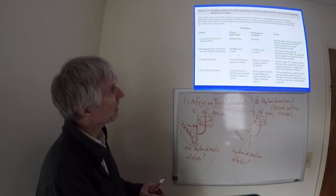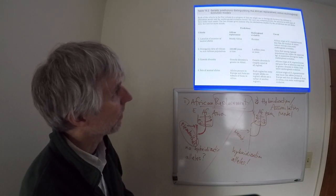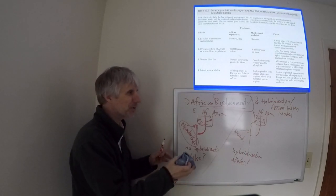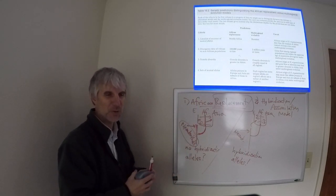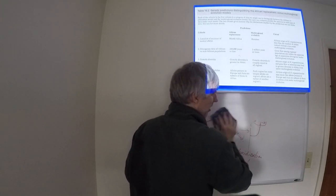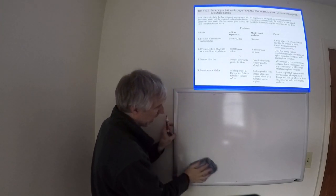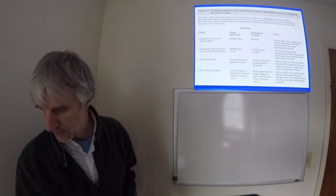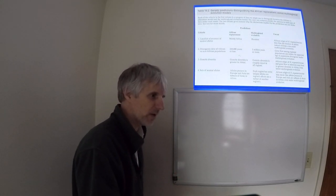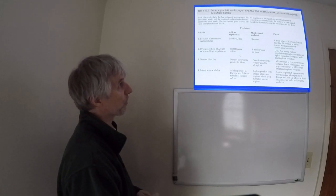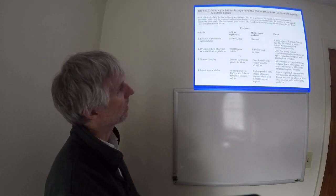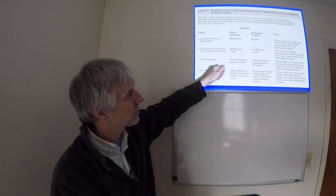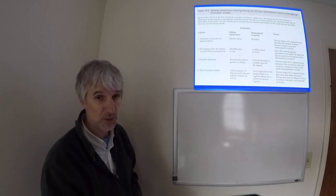All right, so we have these models, the African replacement and the multi-regional. Again, I'm not doing the other two. The textbook I got this from doesn't do the other two either, because they are very silly hypotheses. They're almost there as an exercise in the scientific method. You go through all of those, and they're very easy to disprove. All right, so what we're going to do is use various criteria as a way to test our two predictions.